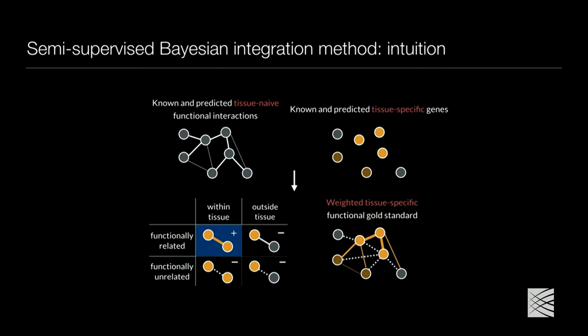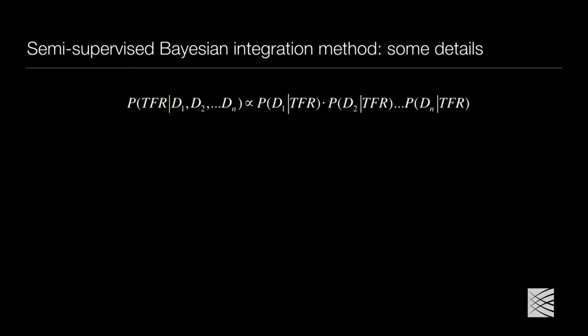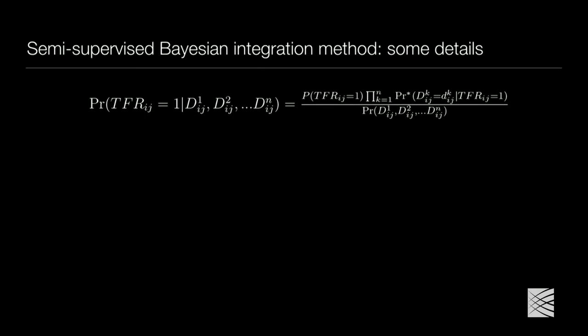To expand on limited data, we made a semi-supervised framework where we take not just known interactions and known tissue expression, but also predict tissue-naive functional interactions and tissue expression. We combine these to make a weighted tissue-specific functional gold standard that takes into account how confident we are that an edge might be a tissue-specific functional edge. This framework is essentially an expansion of a chain rule, with an implicit conditional independence hypothesis — which is probably really violated given how large this data is.